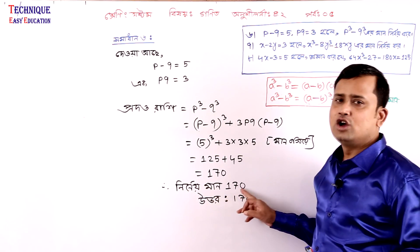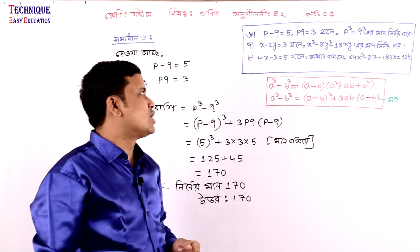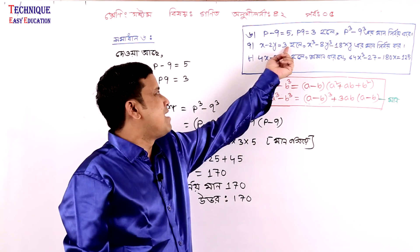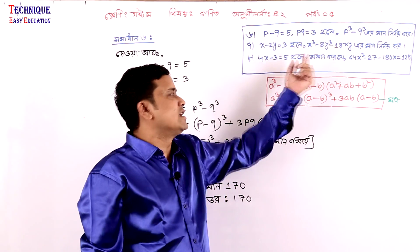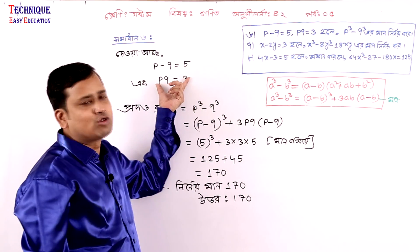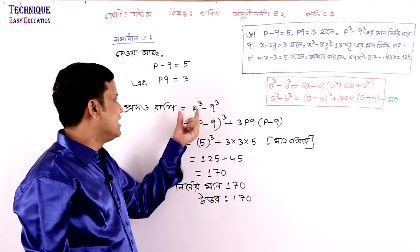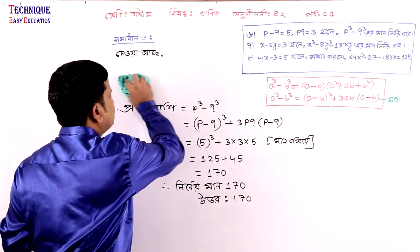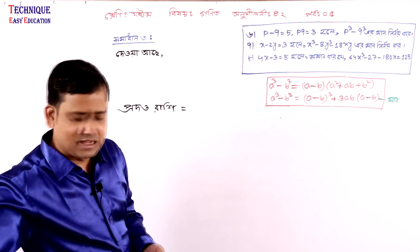So the answer is 170. Look bondura (friends), the answer comes to 170. See how many marks are involved - a cube minus b cube - so the answer here is 170.